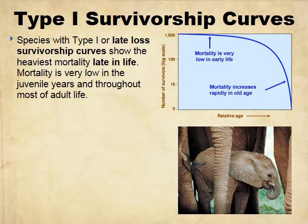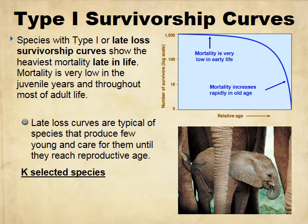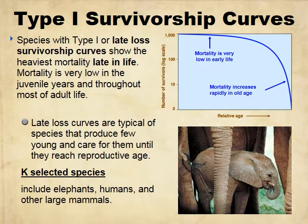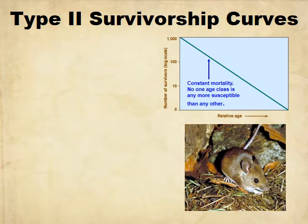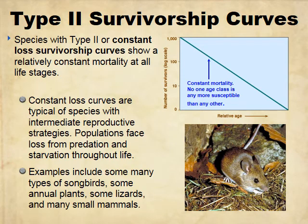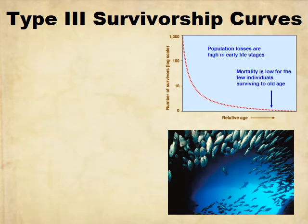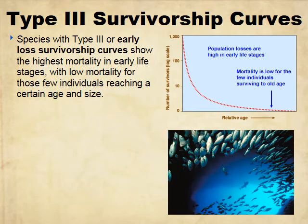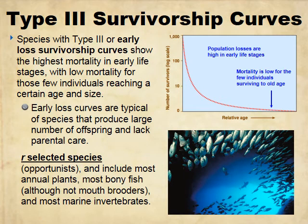This slide goes through exactly what I just said — pause and take a look at it. Type two survivorship includes songbirds, annual plants, lizards, and many small mammals. Type three is your early-mortality, R selected species curve. And that's it — I look forward to seeing you in September.